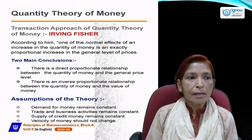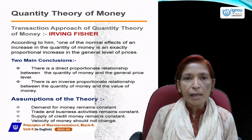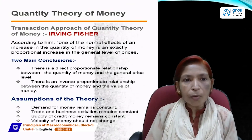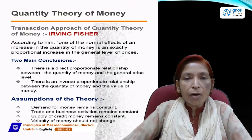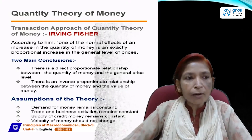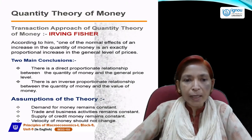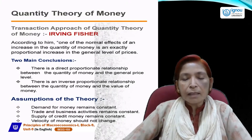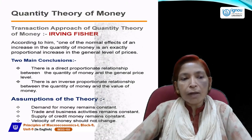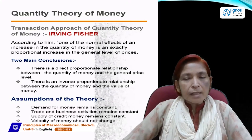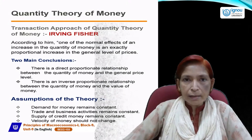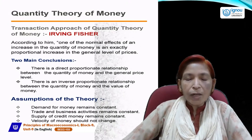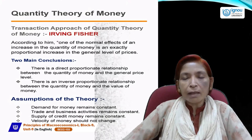According to Irving Fisher, who propounded the transaction approach of quantity theory of money, one of the normal effects of an increase in the quantity of money is an exactly proportionate and direct increase in the general level of prices. In simple words, this theory tells us how much an increase in money supply will affect the general price level in the economy.